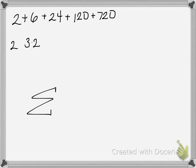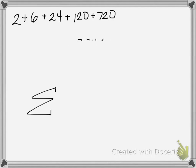3 times 2, and 24 is 4 times 3 times 2, and 120 is 5 times 4 times 3 times 2, and so on. We realize that we actually have a factorial happening here. Another way of writing this: 2 is the same as 2 factorial, 6 is 3 factorial, 24 is 4 factorial, and so on.